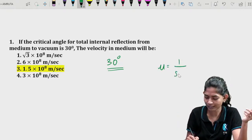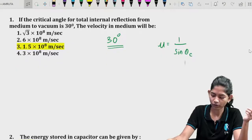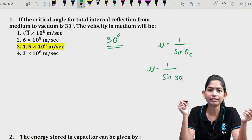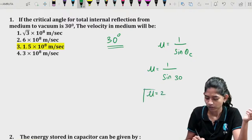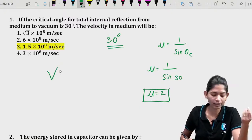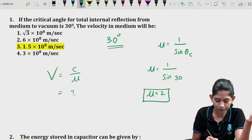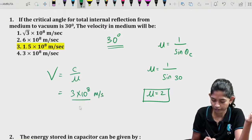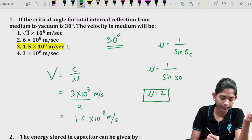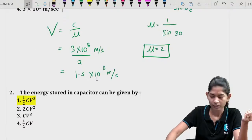mu = 1 / sin(θc). θc = 30°, and sin(30°) = 1/2, so mu = 2. The refractive index is 2. Now the velocity in the medium is given by c/mu = (3 × 10⁸) / 2 = 1.5 × 10⁸ m/s. That is option 3. Let me know your answers in the comment section and we move to the next question.